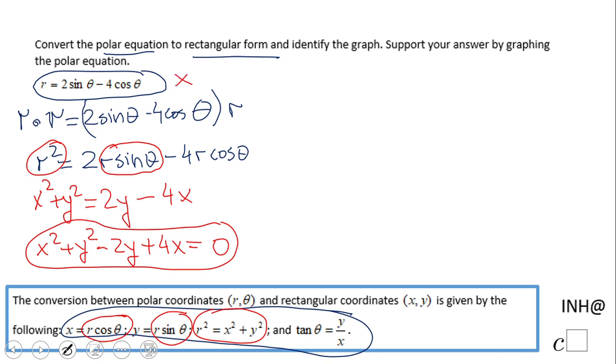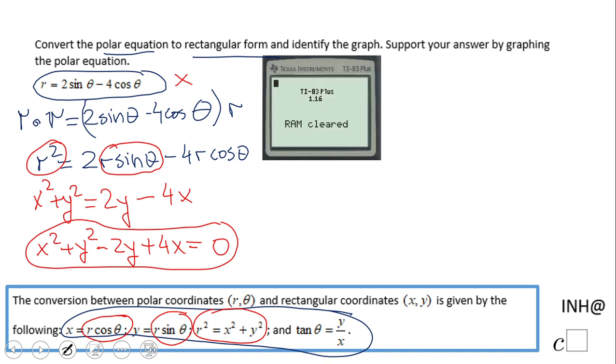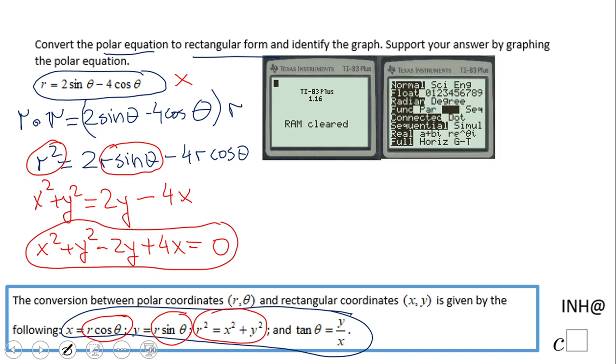Okay, now let's take a look a little bit on the calculator, how it looks like. So I have this TI-83 where I clear the RAM, and then don't forget to choose the polar mode. Also going to be shooting in radian.